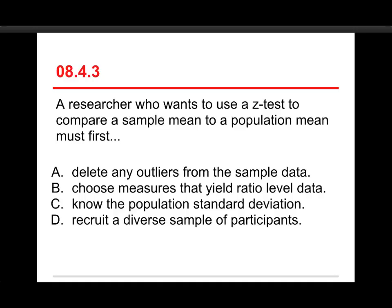Okay. Number three. A researcher who wants to use a z-test to compare a sample mean to a population mean must first: A, delete any outliers from the sample data; B, choose measures that yield ratio-level data; C, know the population standard deviation; or D, recruit a diverse sample of participants. The answer is C. You have to know the population standard deviation. I'll show you in a second.